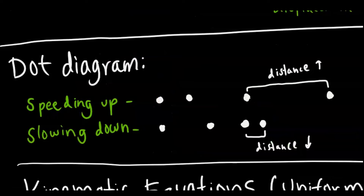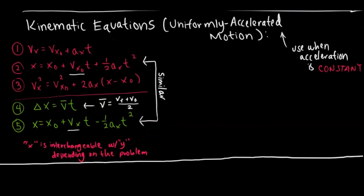Another thing to take note of is the dot diagram — being able to differentiate the position of an object, whether it's speeding up or slowing down. Let's say you had a motion camera that captured the position of an object every increment of seconds, like every one second. In the first example, you can see it's speeding up because since it's going faster, in that same amount of time when it takes the picture, the distance it travels is greater. In contrast, when it slows down, that distance decreases.